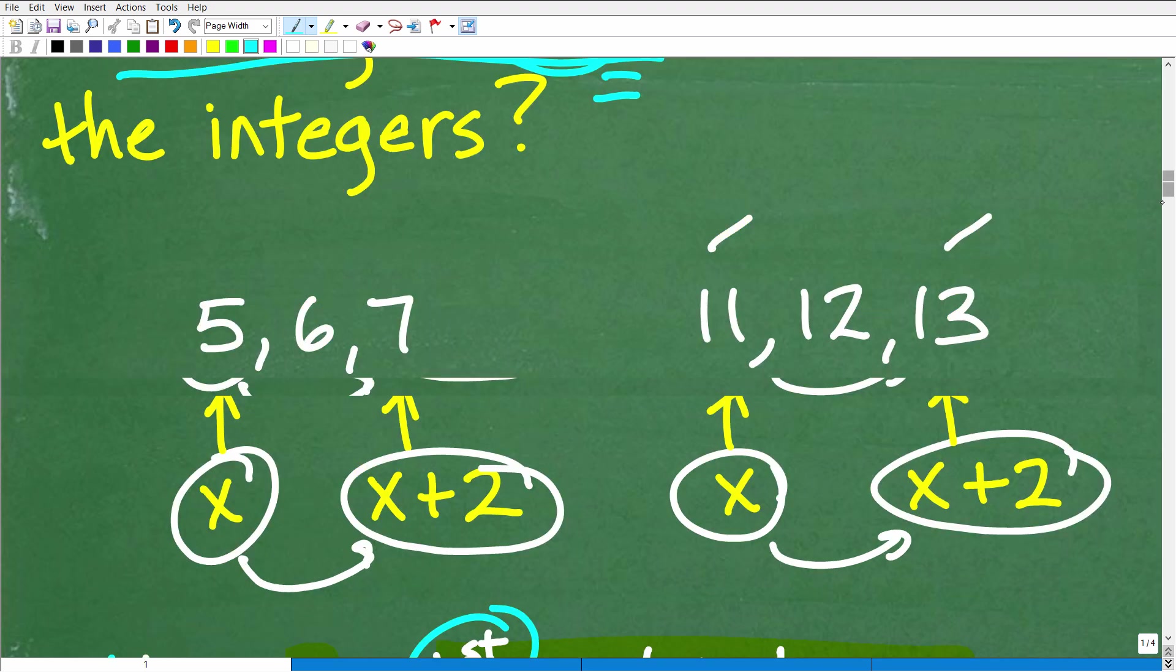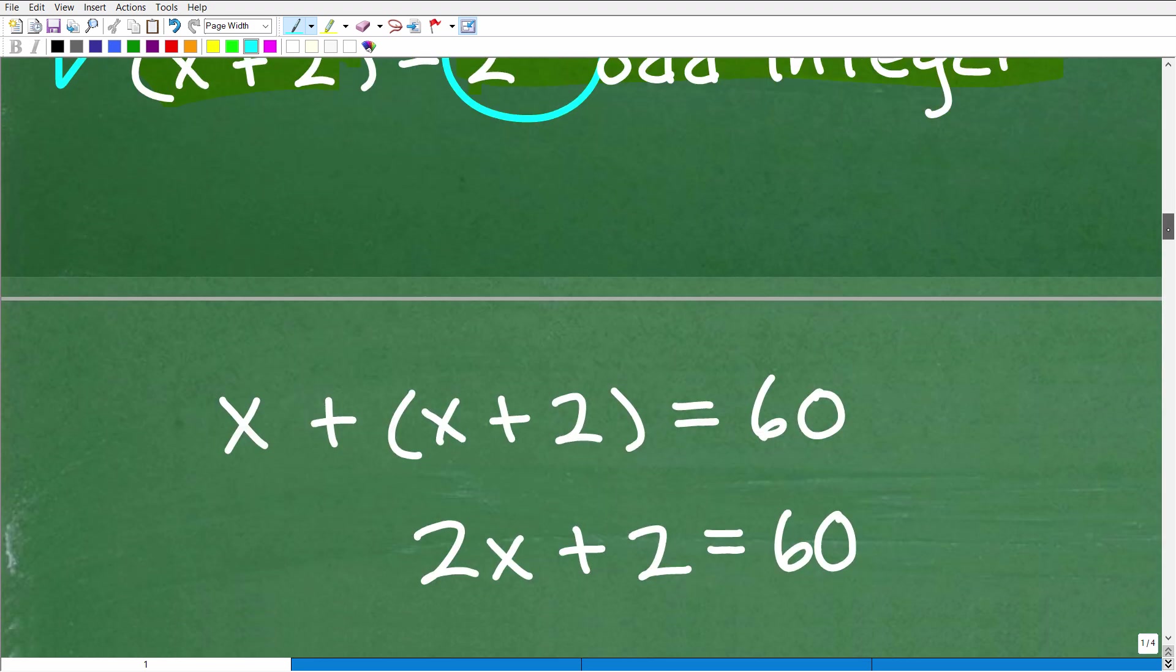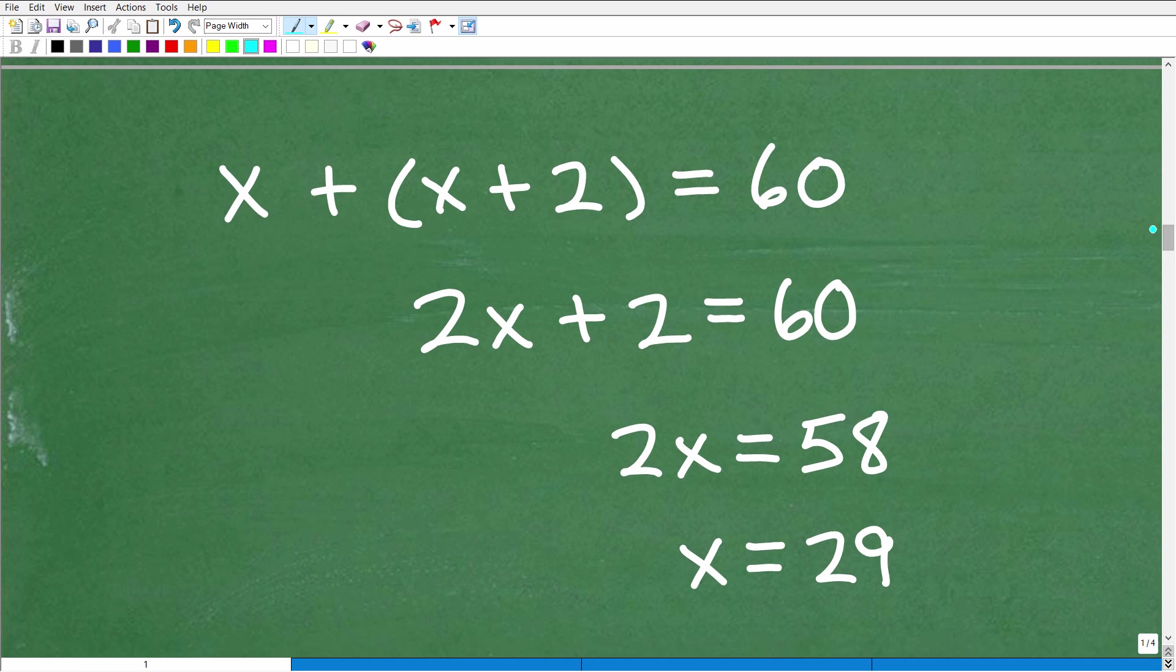All right, so now we're going to build an equation. We have these variables, but in order to solve for these unknown values, we need to set up an equation. So here is our first odd integer, and this is our second odd integer right here. So we have X and X plus two. The sum of these two odd integers is 60.